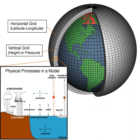Atmospheric and Oceanic GCMs are key components along with sea ice and land surface components. GCMs and global climate models are used for weather forecasting, understanding the climate, and forecasting climate change. Versions designed for decade-to-century time scale climate applications were originally created by Shukuro Manabe and Kirk Bryan at the Geophysical Fluid Dynamics Laboratory in Princeton, New Jersey. These models are based on the integration of a variety of fluid dynamical, chemical, and sometimes biological equations.